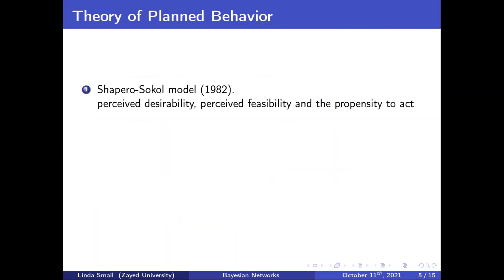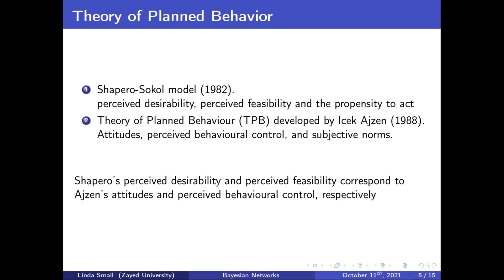The first model proposed to model intentions was by Shapero in 1982, based on desirability — you desire to start a business — and feasibility — it's possible. Later, more factors were added, like the propensity to act and the role of society. It is still used, but somewhat less than the second model: the Theory of Planned Behavior, which started in 1988 by Ajzen.